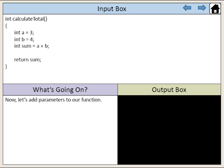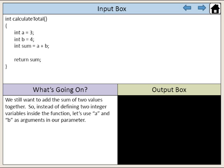Now, let's add parameters to our function. We still want to add the sum of two values together. So, instead of defining two integer variables inside the function, let's use a and b as arguments in our parameter.